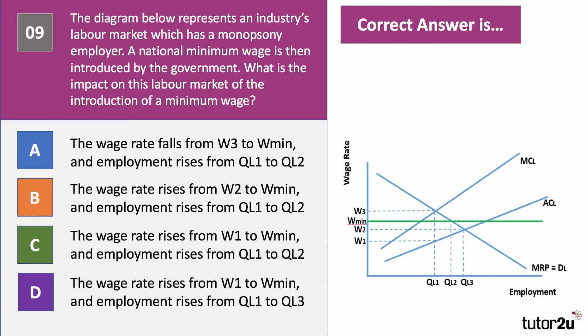The correct answer to question nine — minimum wage with a monopsonist — is C. The wage rate will go up and employment will also rise from QL1 to QL2. Once you bring a minimum wage in, that's a pay floor — you can't pay below this level. This becomes the marginal labour cost up to the point where they have to start raising the wage. The marginal cost of labour now meets the marginal revenue product at QL2, so they employ QL2 people and pay them the minimum wage. Employment and wages both increase.